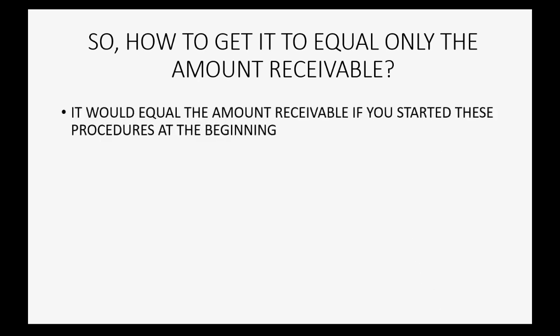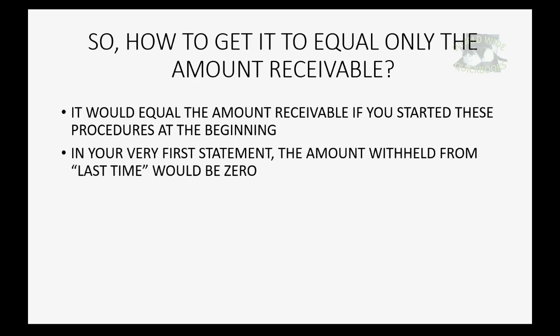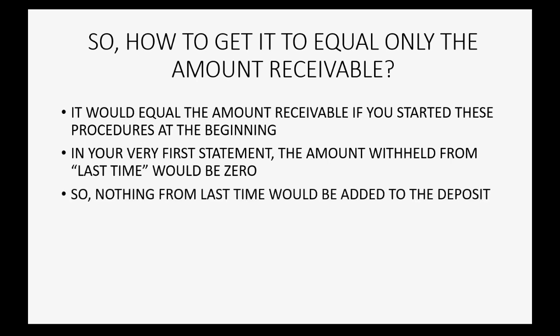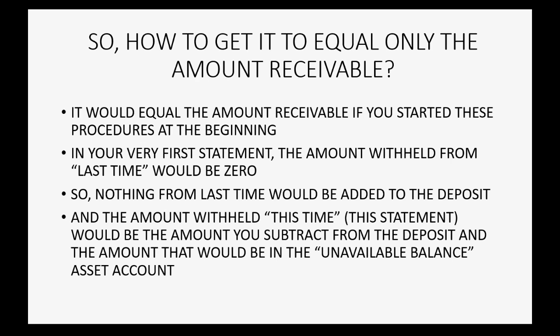It would equal the correct receivable amount if you had actually started these procedures at the very beginning when you opened your Amazon store. In other words, in your very first statement, the amount withheld from last time would be zero because there would be no last time. So if nothing from last time would be added to the deposit, the amount withheld this time would be what you subtract from the deposit and what would sit in the unavailable balance asset account.